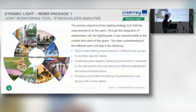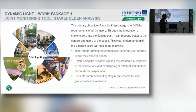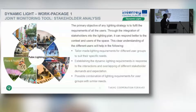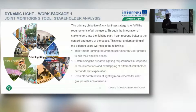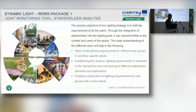The primary objective of any lighting strategy is to fulfill the requirements of users. Only through integrating users and stakeholders in a public lighting strategy can we ensure the context and users of the space are taken care of. Understanding who the stakeholders and users are allows us to create tailor-made lighting requirements, or combine requirements where certain user groups have similar needs.